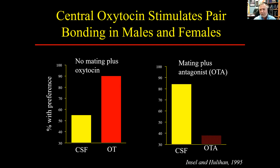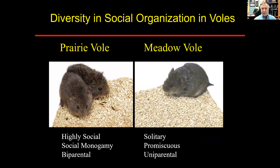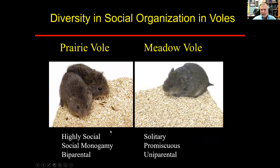Vasopressin is also important in males, though I won't discuss that today. Oxytocin is important for both males and females — it's part of that nurturing bond. I got really interested in these voles as a grad student. Not all voles are the same — prairie voles are not only monogamous but highly social, they crave social contact and have high levels of social reward. Meadow voles or montane voles, by contrast, are solitary — they prefer to be by themselves, mate but don't form bonds.